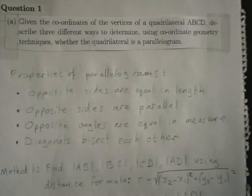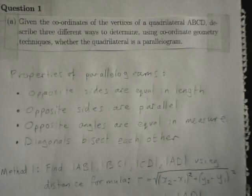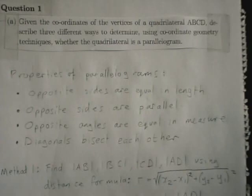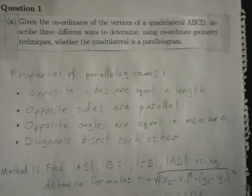This is 2012 paper 2 question 1. You're given the coordinates of the vertices of a quadrilateral and you have to describe using coordinate geometry how you determine whether that quadrilateral is a parallelogram.